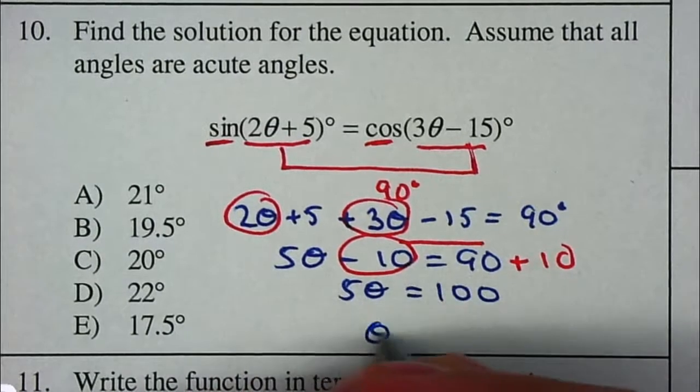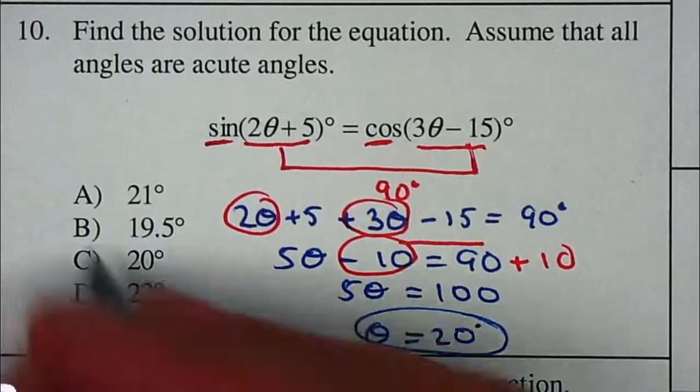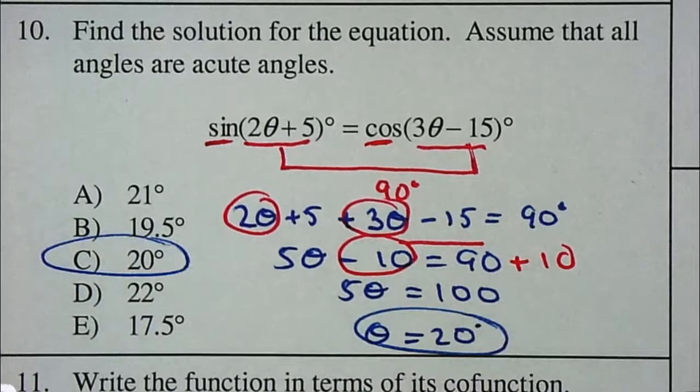I'm going to divide by 5 on both sides. Theta is equal to 20 degrees. So therefore your answer will be letter C.